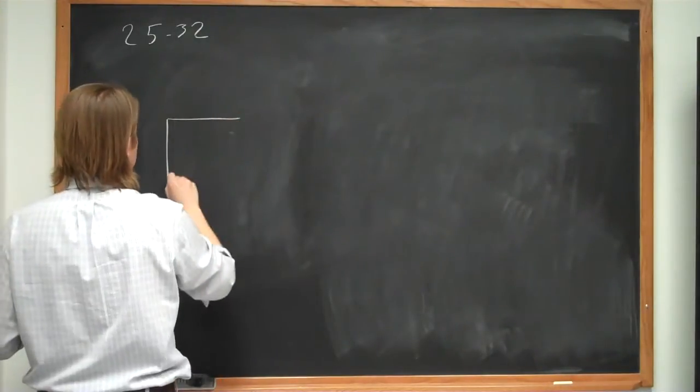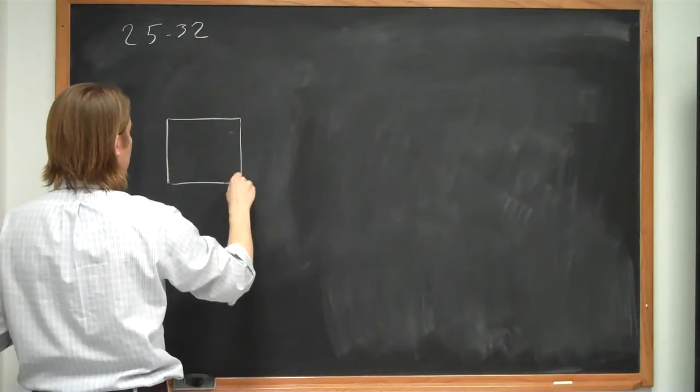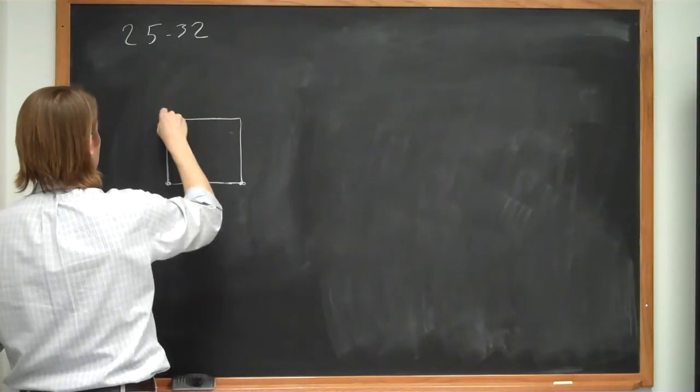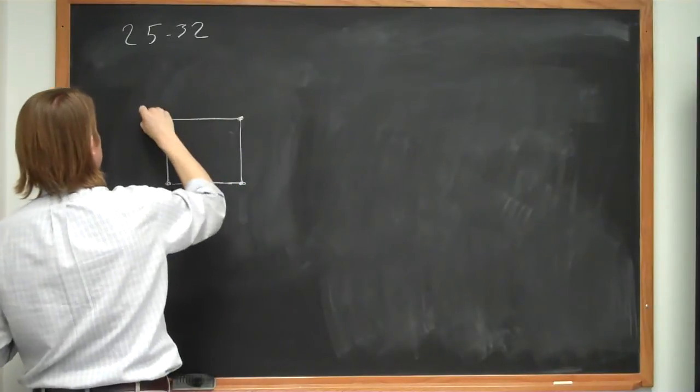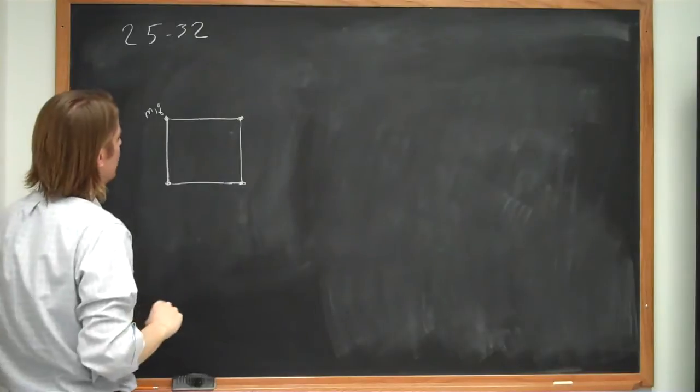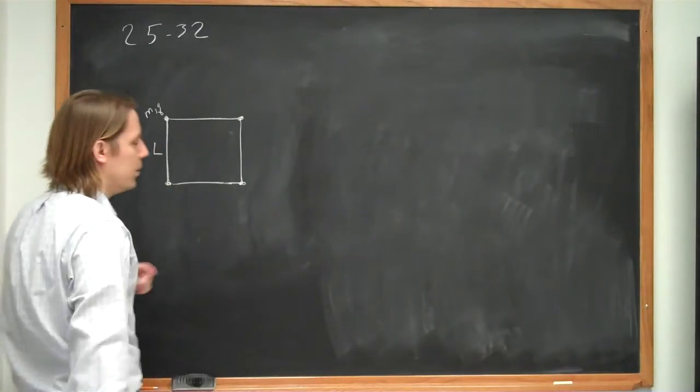Four charges on a square. Each is m, q, and the edge of the square is l.